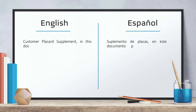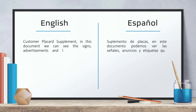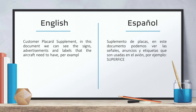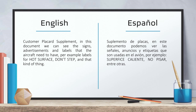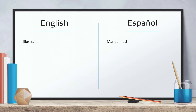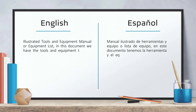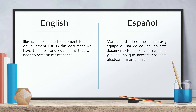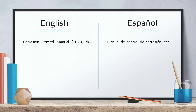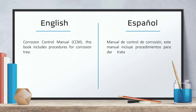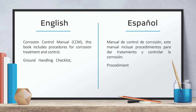Customer placard supplement — in this document, we can see the signs, advertisements and labels that the aircraft needs to have. For example, labels for hot surface, step down, and that kind of thing. Illustrated tools and equipment manual — in this document, we have the tools and equipment that we need to perform maintenance. Corrosion control manual — this book includes procedures for corrosion treatment and control.